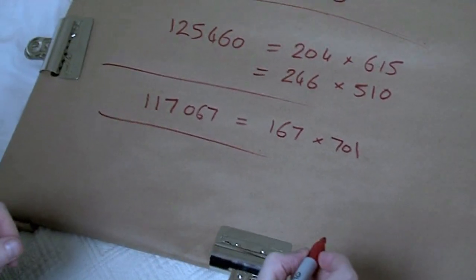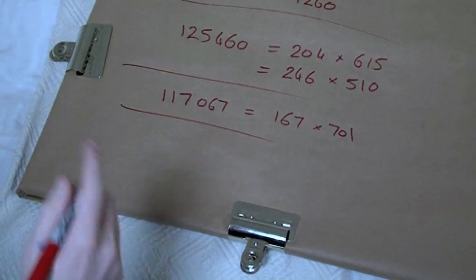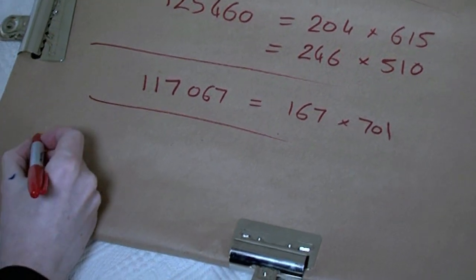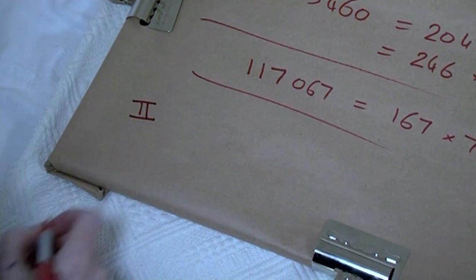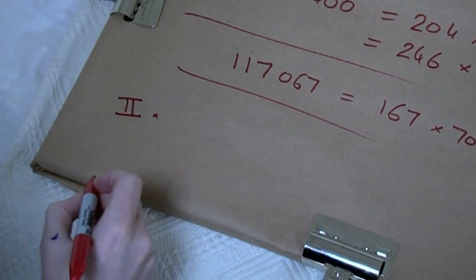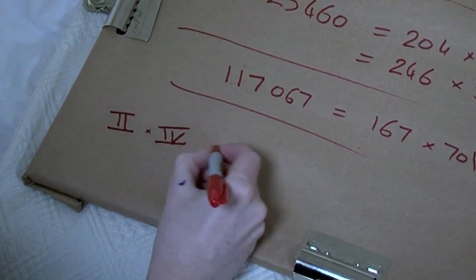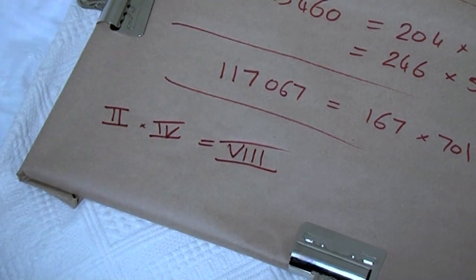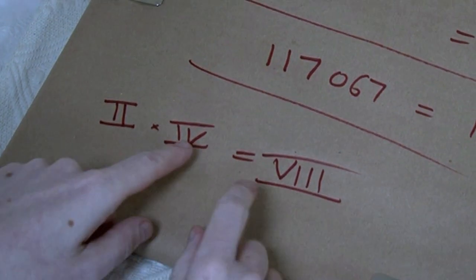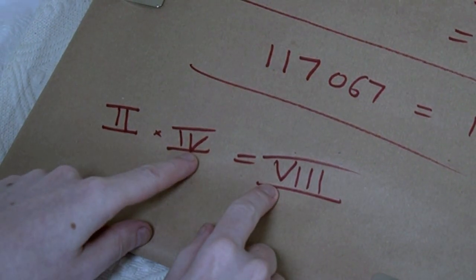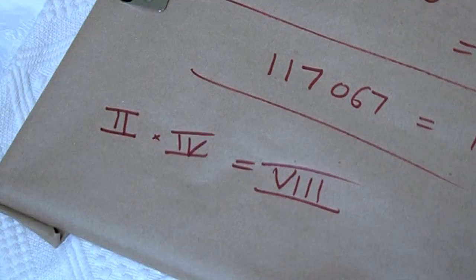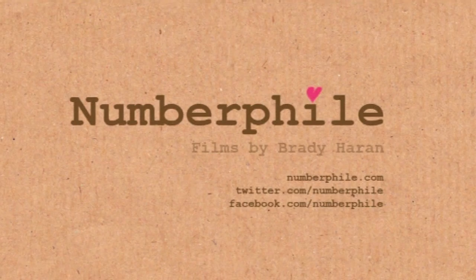Now this I love — you can do it with Roman numerals as well. Two in Roman numerals times four equals eight: II × IV = VIII. And you've got three I's and a V on each side — the V and the three I's. So you can do vampire numbers with Roman numerals too. Let's name it — we'll call it a Caesar vampire number. Done.